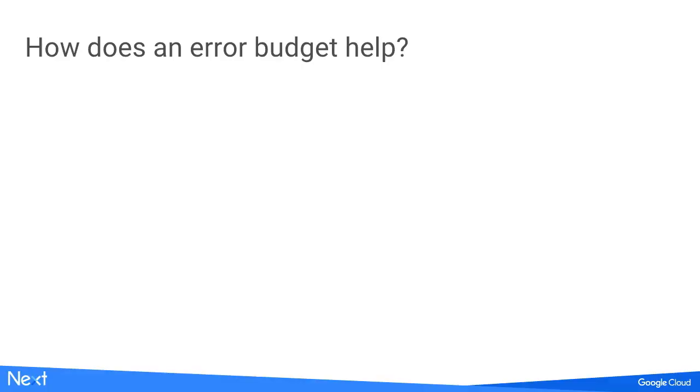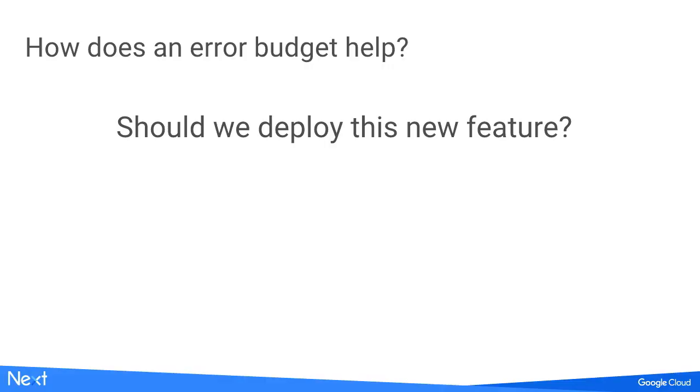How does an error budget help you? It helps guide the decision-making process about many different things. Anytime you change your service, there's risk and effort involved. For example: should we deploy this new feature? There's risk and effort in deploying it. Look at your SLO and error budget. Have you consumed all of your error budget for this month? If yes, you should probably wait — give your users a break and deploy next month.